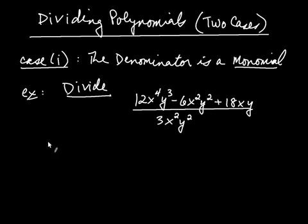When you have this situation, what you simply do is take all the terms in the numerator and divide them individually by the denominator. So it's going to be this divided by that, and then this divided by that, and then this divided by that. So you write it out.